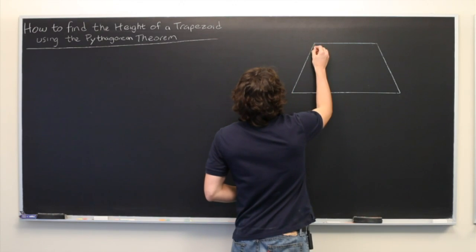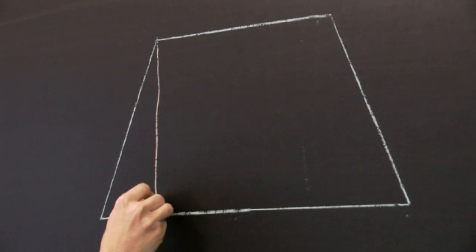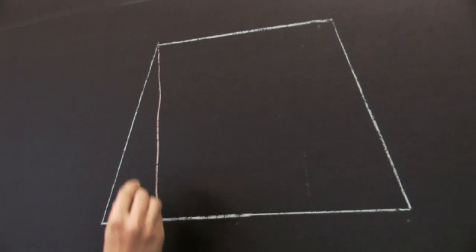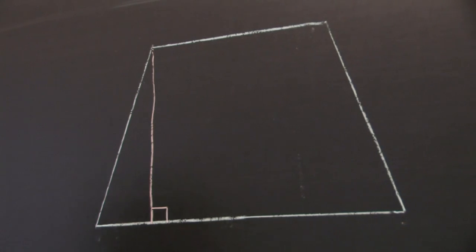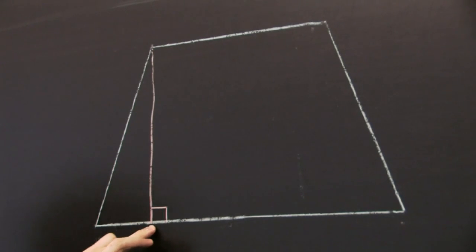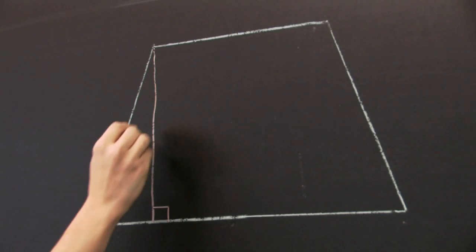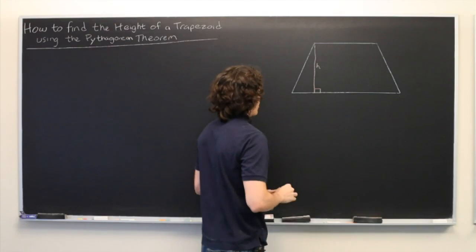Let's draw what is known as an altitude from one of the top vertices down to the bottom base. An altitude is simply a line that is perpendicular to the base, and the length of that will be the height of our trapezoid.